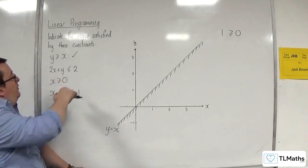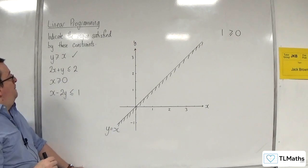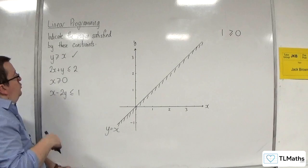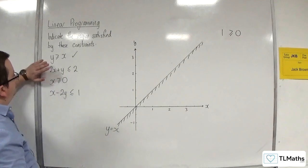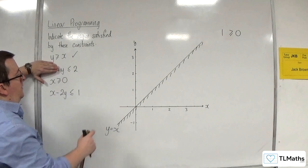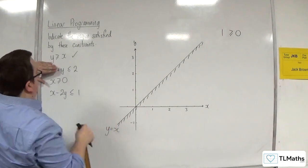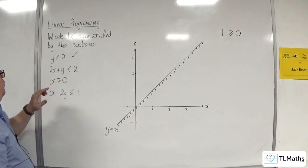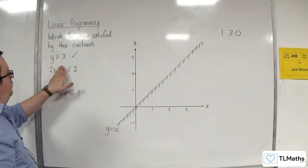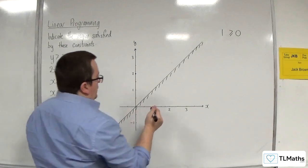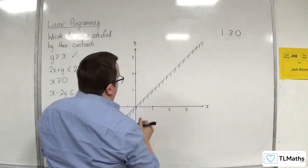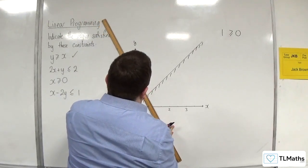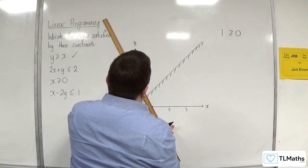So let's look at the next one. 2x plus y is equal to 2. Let's draw that. So for this, I'm going to try when x is 0, y would be equal to 2. So I know it goes through that point there. And when y is 0, x would be equal to 1. So it would go through that point there. So going through those two points, let's draw a line going through them.